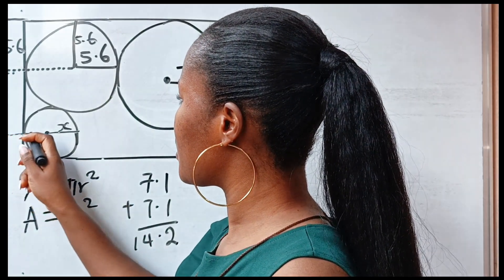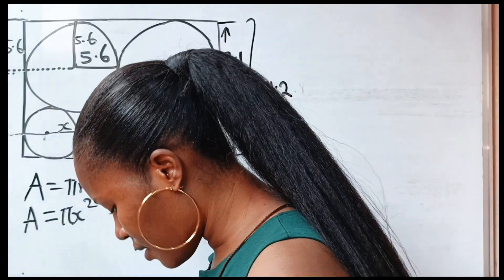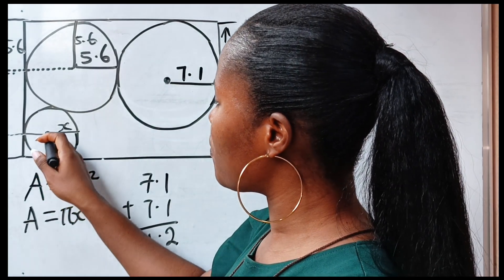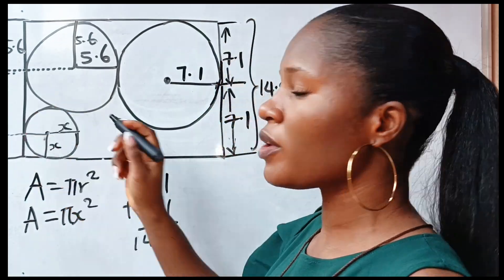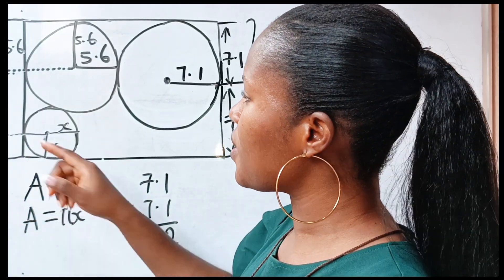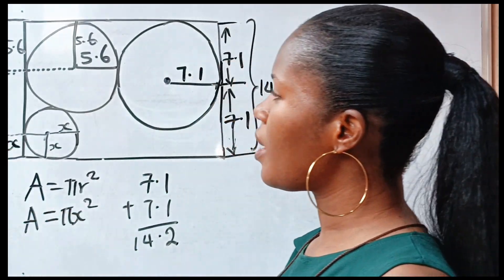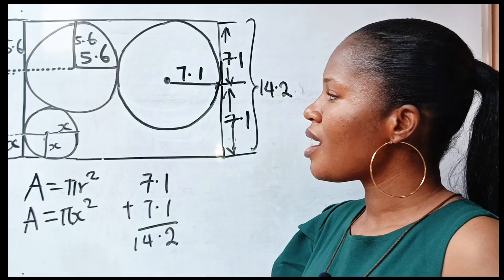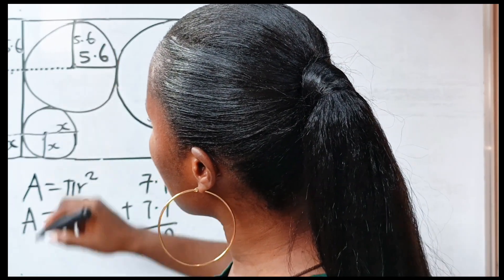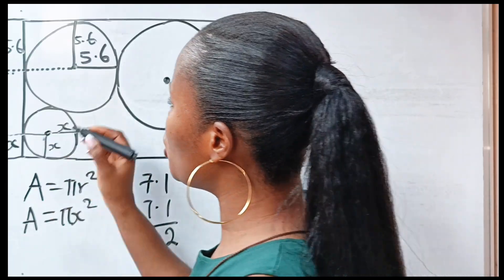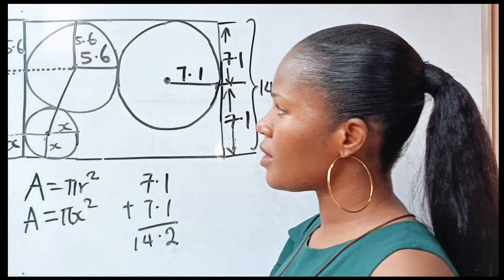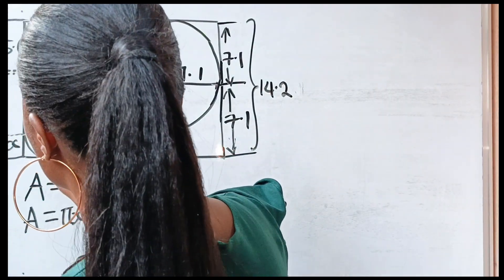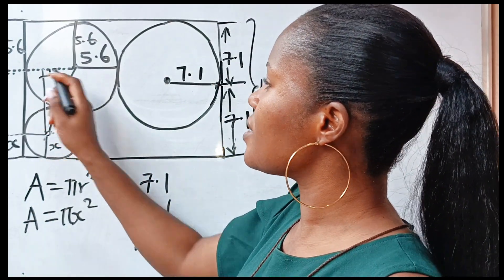Now let us drop a straight line here and another straight line from here. Remember that from here to here is x as well, which is the radius of the smaller circle. So it means that from here to here is also x. We need to get an equation that has x in it. If this is the center of this circle and this is the center of this circle, if we join them together and drop a perpendicular from here to the center of the circle, we are going to have 90 degrees here.